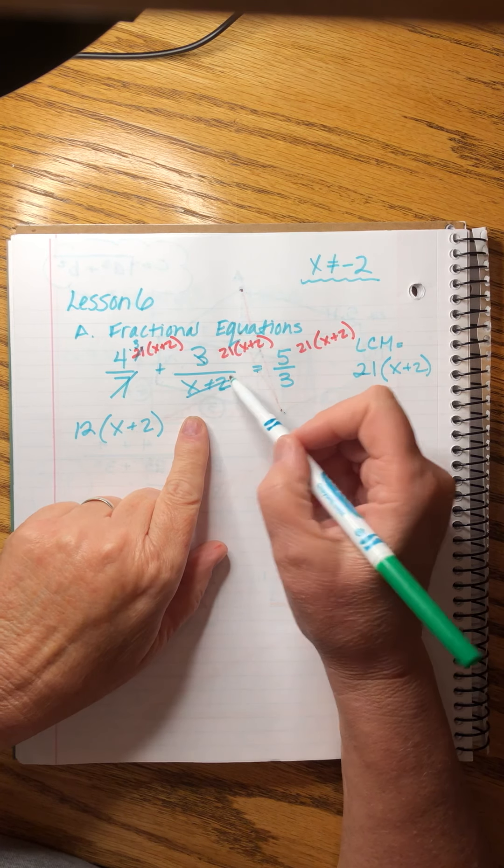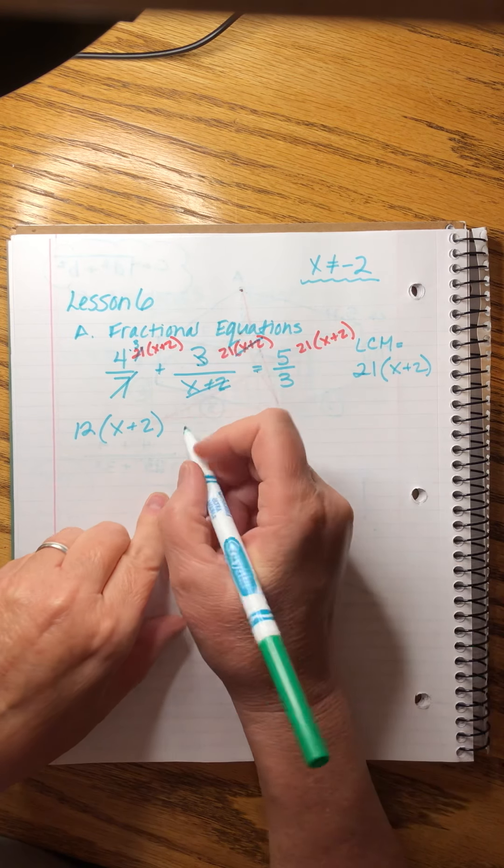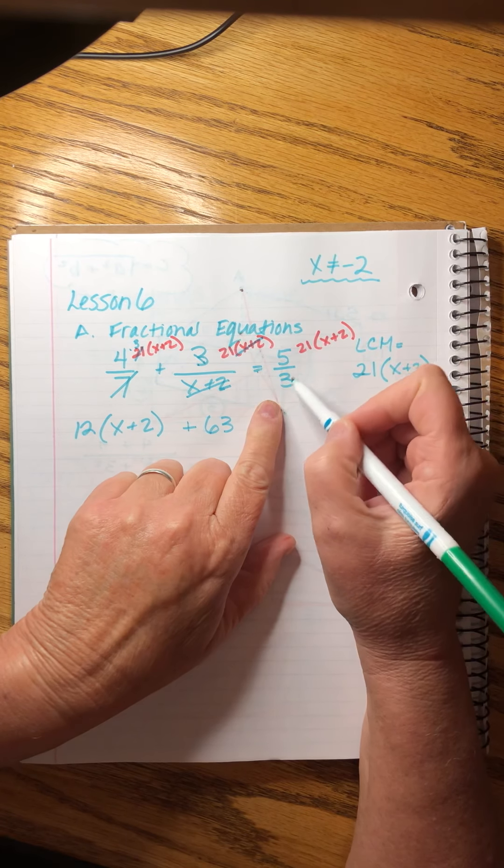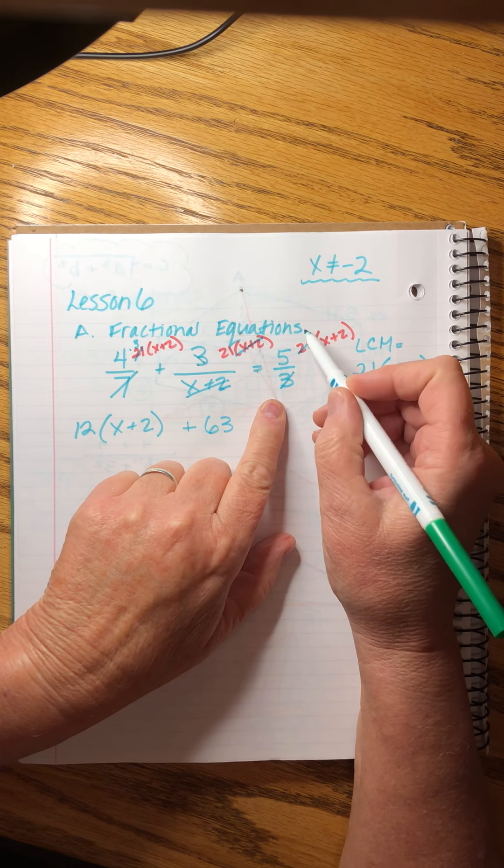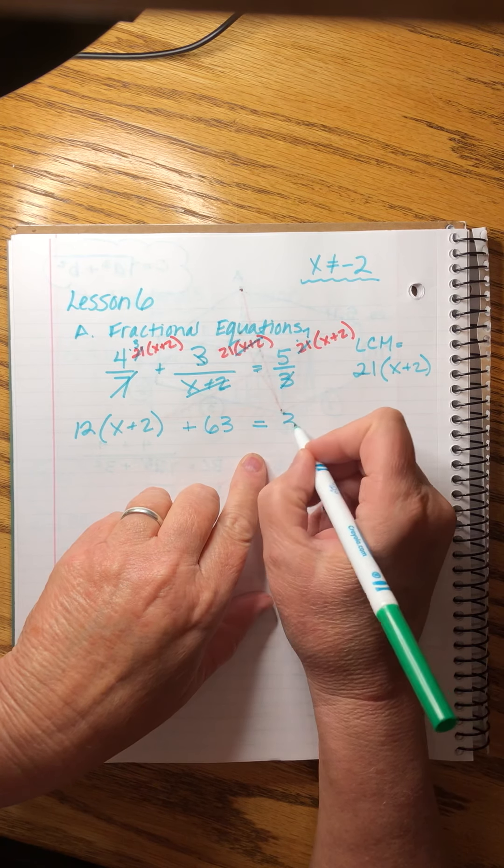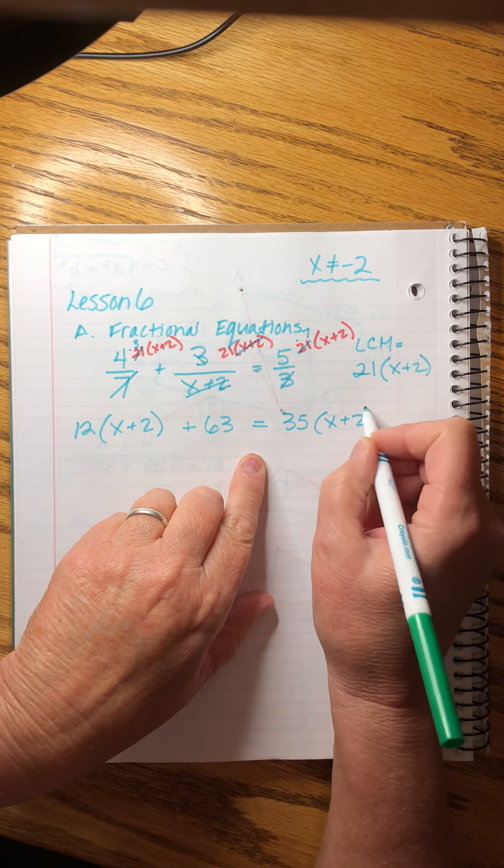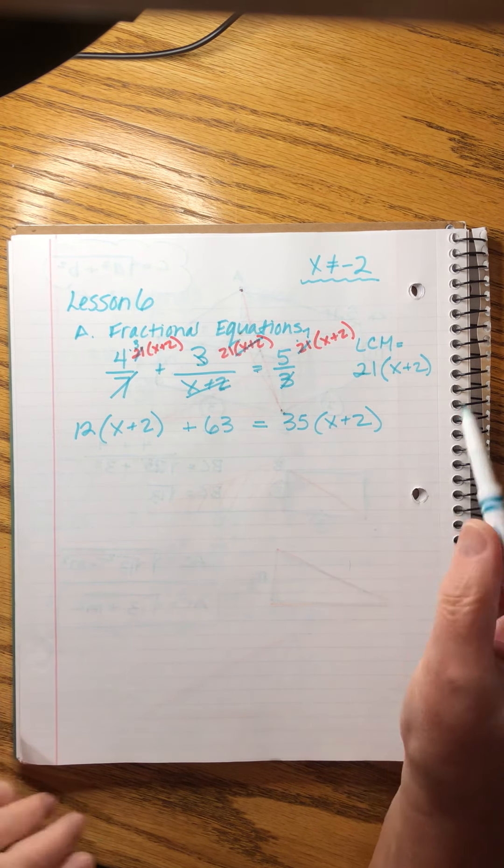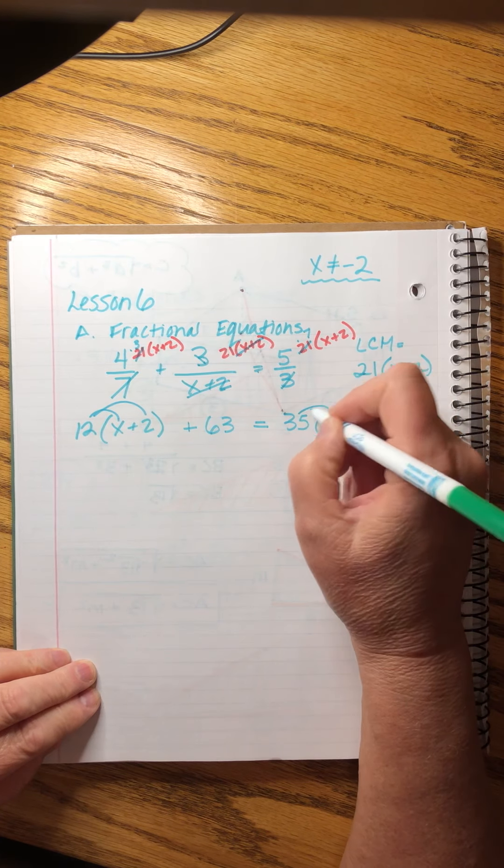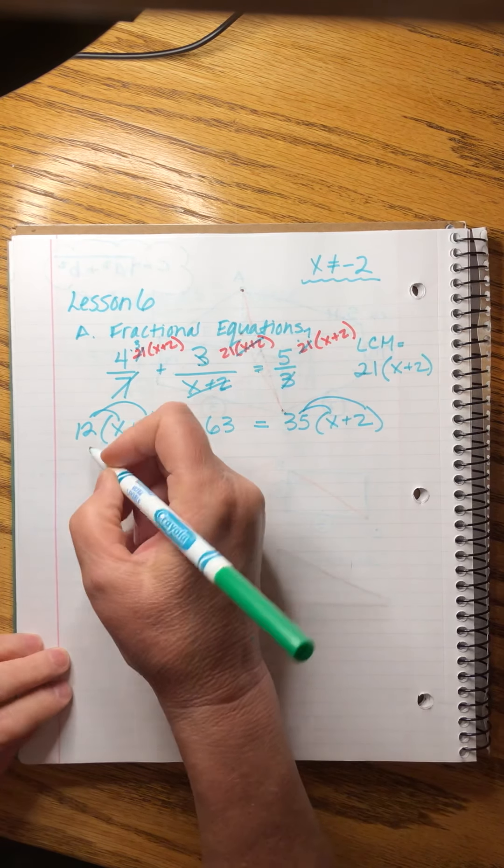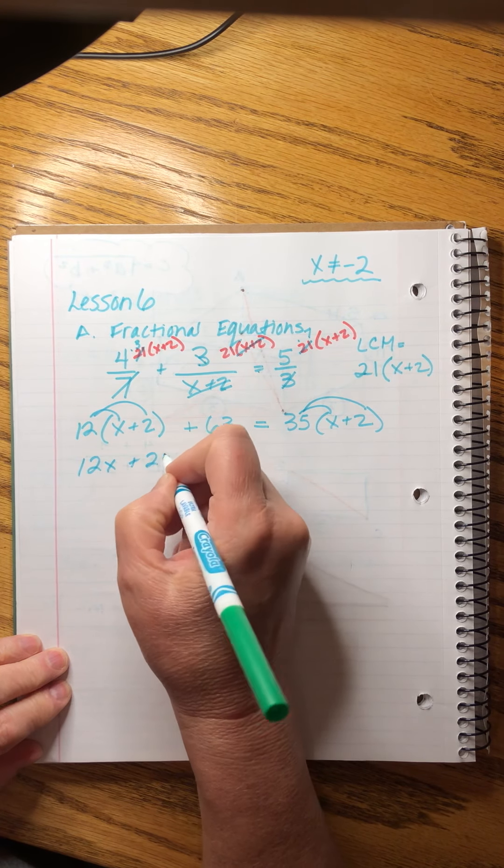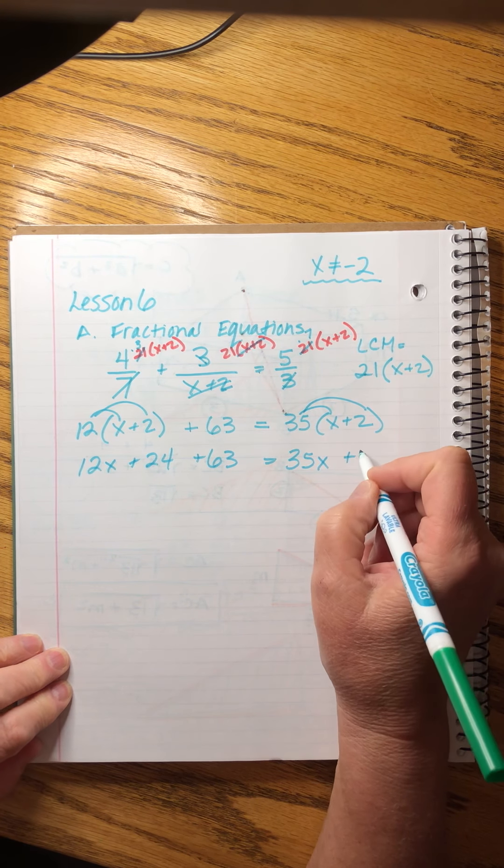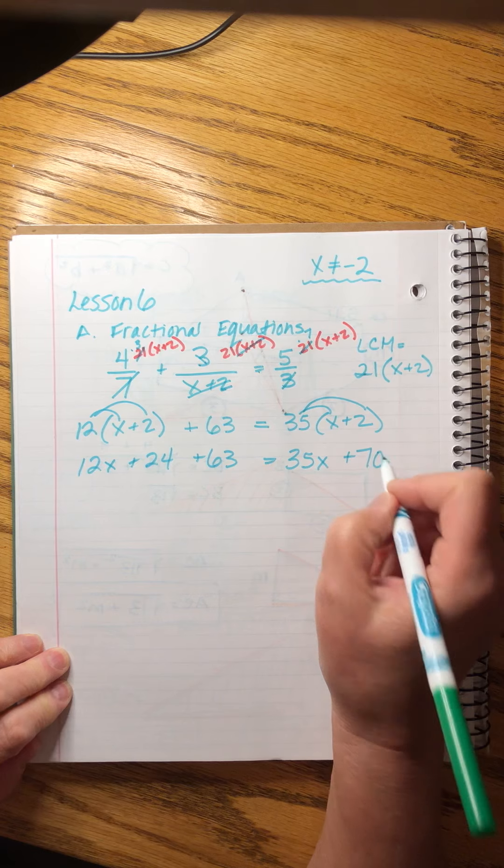This one, this is the one I was looking for. The x plus 2's are going to cancel and I have 3 times 21. So, I'll say plus 63 equals and then here the 3 cancels against the 21. It leaves me with a 7. 5 times 7 is 35 and I still have the x plus 2. I still have a bit of work to do here but I love the lack of denominator. So, now I'll distribute. I always make the signs just to remind myself. 12x plus 24 plus 63 equals 35x plus 70. Beautiful.